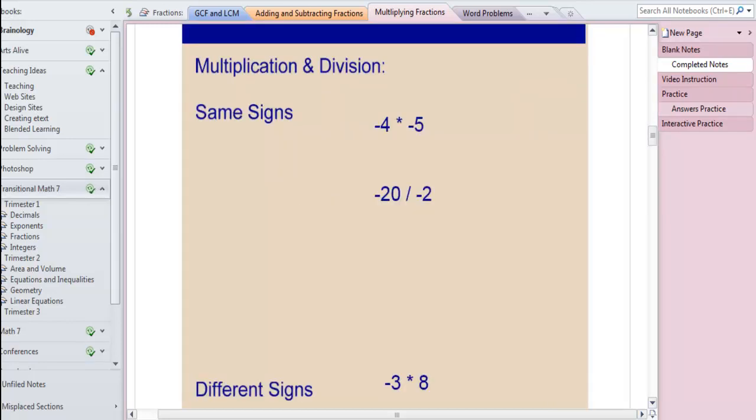Now let's review our integer rules for multiplication and division. So if they're the same signs, what sign do we end up with? Positive, right? Negative 4 times negative 5 is 20. So what's negative 20 divided by negative 2? 10.